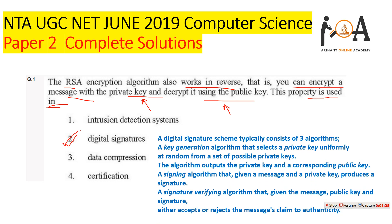A digital signature is a scheme consisting of typically three algorithms: a key generation algorithm that selects a private key uniformly at random from a set of possible private keys and outputs the private key and corresponding public key; a signing algorithm that, given a message and a private key, produces a signature; and a signature verification algorithm that, given a message, public key, and signature, verifies the signature.